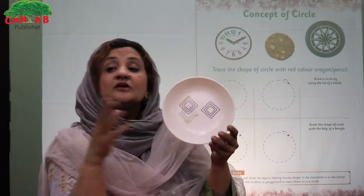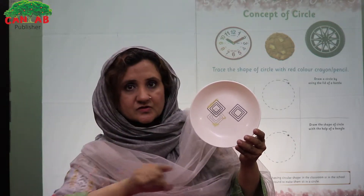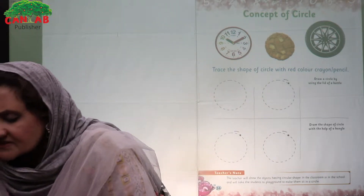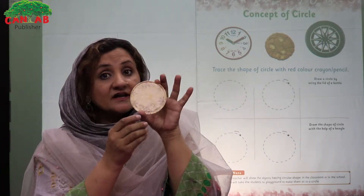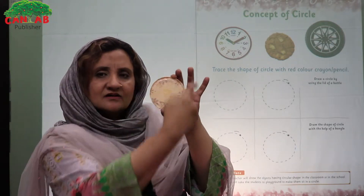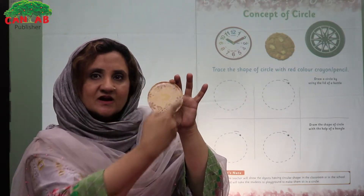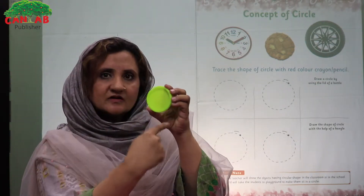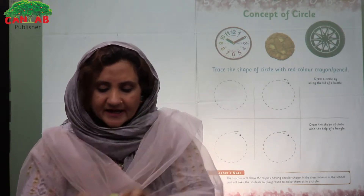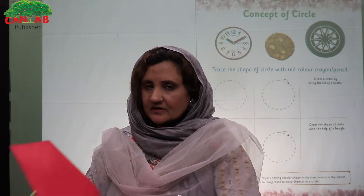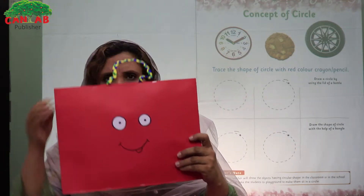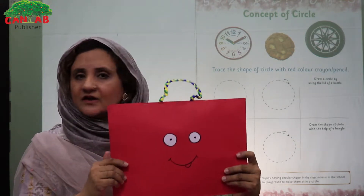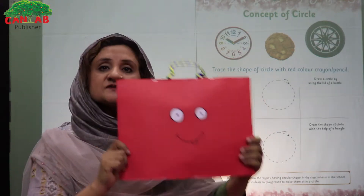Now encourage your students to draw a circle in the air like this. You may show them different objects — this is again a circle because it's going round and round. Then ask: is this going round and round? No, it's not going round and round, so this is not a circle.